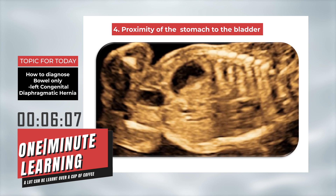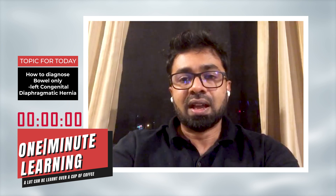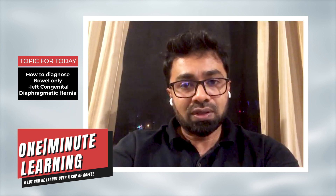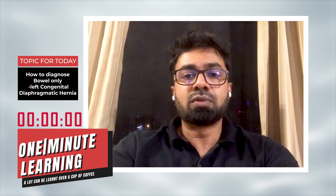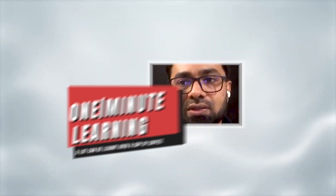The last clue is what I call the 'kissing stomach and bladder sign.' The stomach gets pushed down by the herniating bowel, closer to the bladder, and the distance between the stomach and the bladder would be very, very minimal in this case.